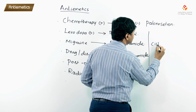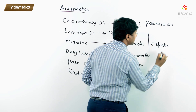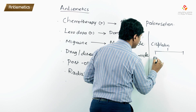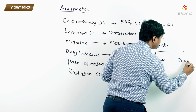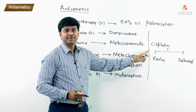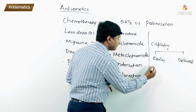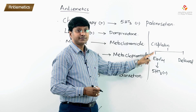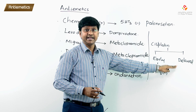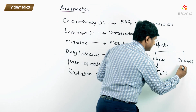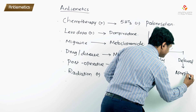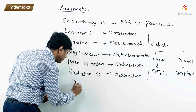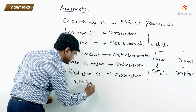Cisplatin is the most emetogenic chemotherapeutic drug. For cisplatin-induced vomiting, there are early and delayed phases. In the early stage — within 24 hours — we give 5-HT3 antagonists. For cisplatin-induced delayed vomiting, beyond two days, the drug of choice is aprepitant.